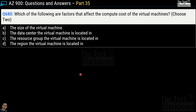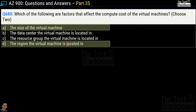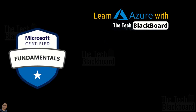Question number 680: which of the following are the factors that affect the compute cost of a virtual machine? Choose two options. Options are the size of the virtual machine, the data center the virtual machine is located in, the resource group the virtual machine is located in, and the region the virtual machine is located in. The correct answers are option A, the size of the virtual machine, and option D, the region the virtual machine is located in.